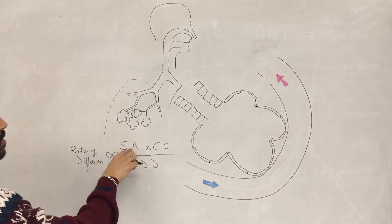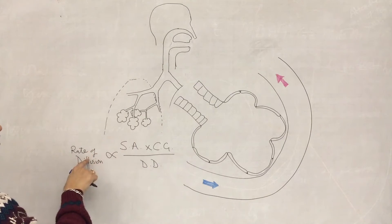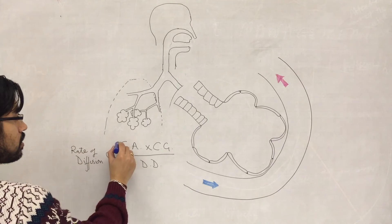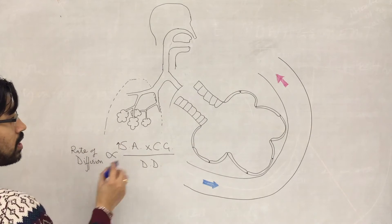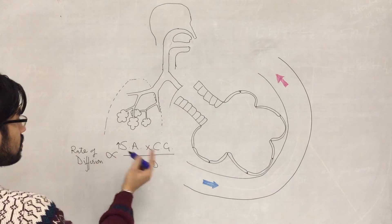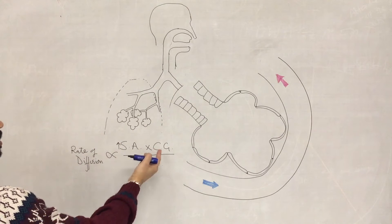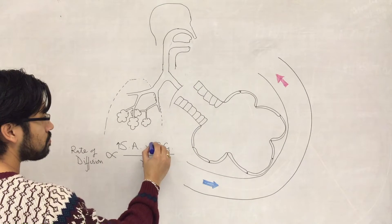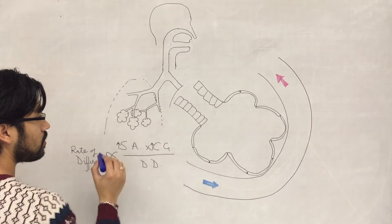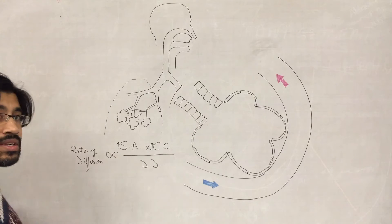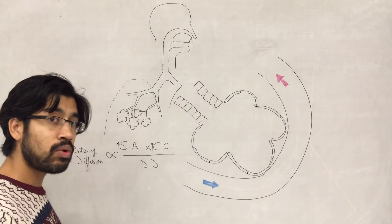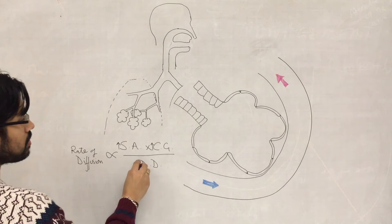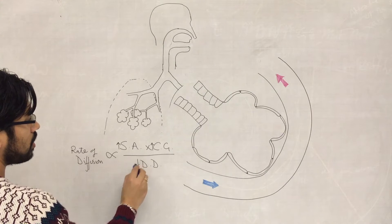If the surface area is higher, the rate of diffusion will be higher. If the concentration gradient is higher, that would also make the rate of diffusion higher. And if the diffusion distance is smaller, then the rate of diffusion will be higher — so we want that distance to be as small as possible.